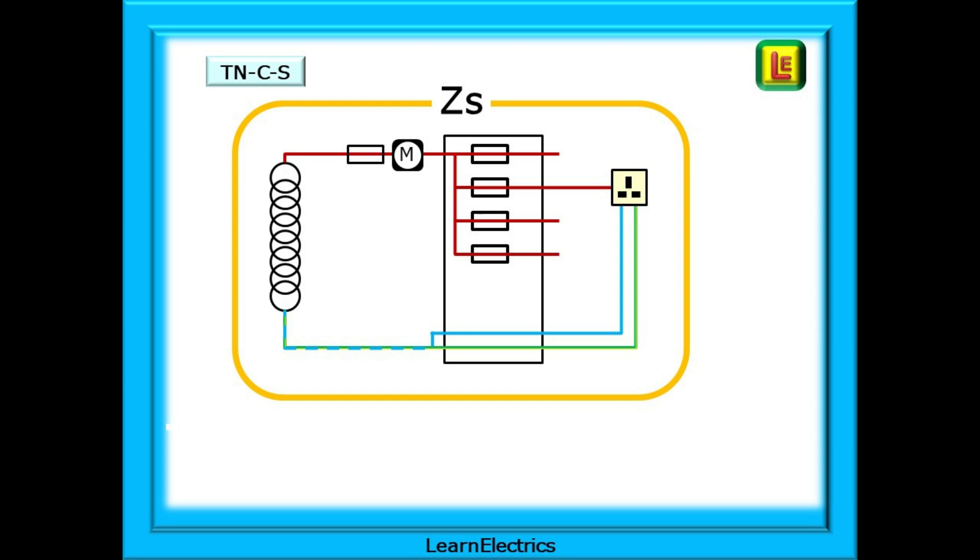If we look at this ZS drawing of a TNCS system, it is like the TNS drawing from earlier, but look again at the bottom of the supply transformer. The connection from the transformer to the consumer unit is just one conductor. In the external part of the installation, Earth and Neutral are combined together. Only at the consumer unit are they separated into two individual cables. Never to meet again.